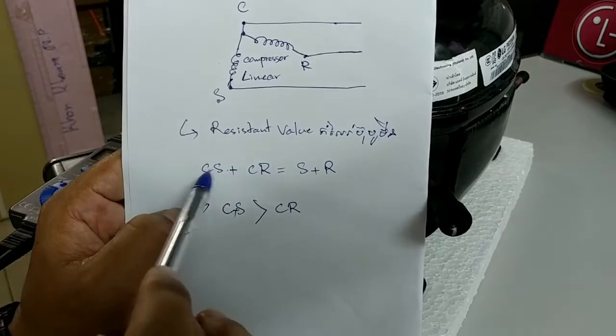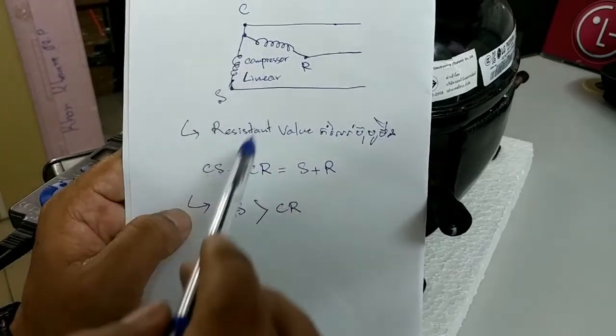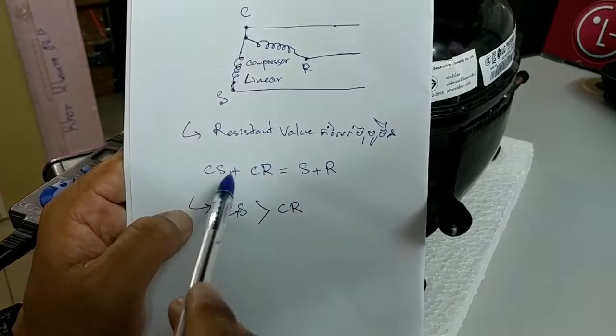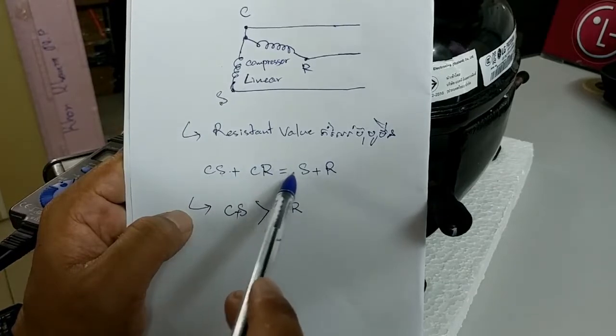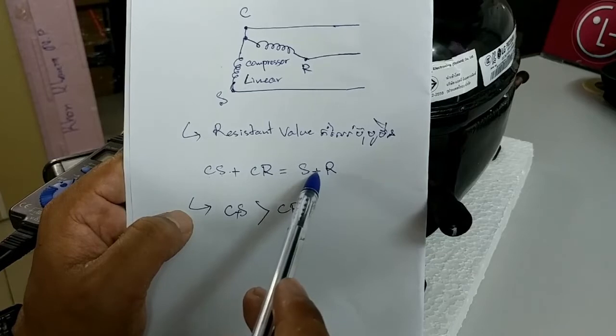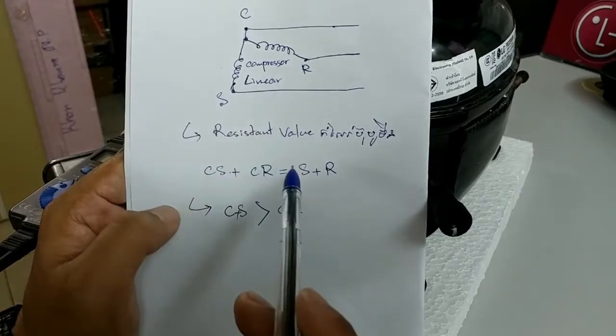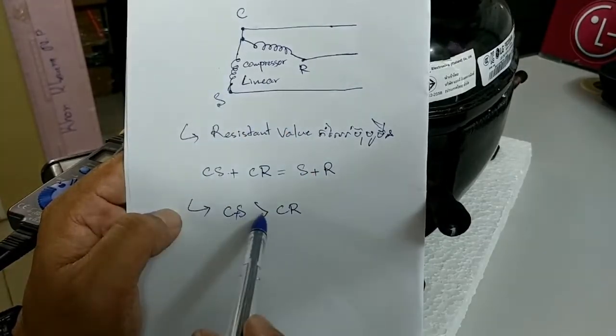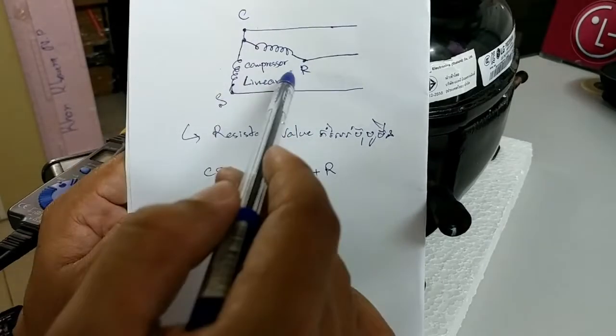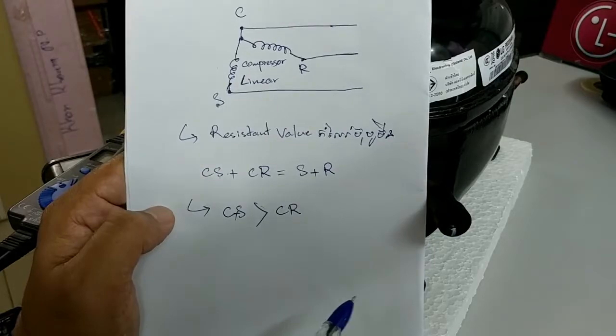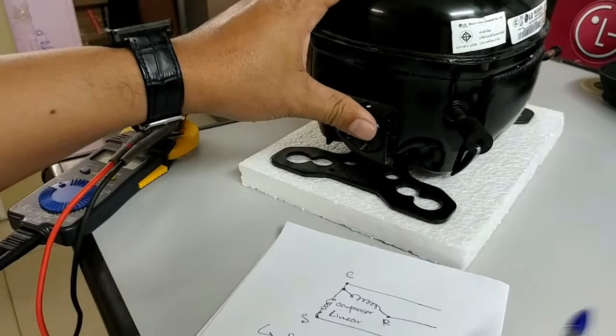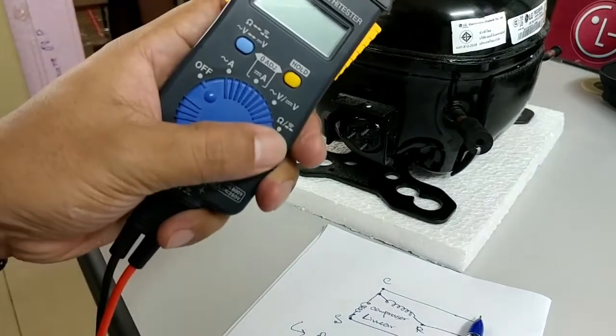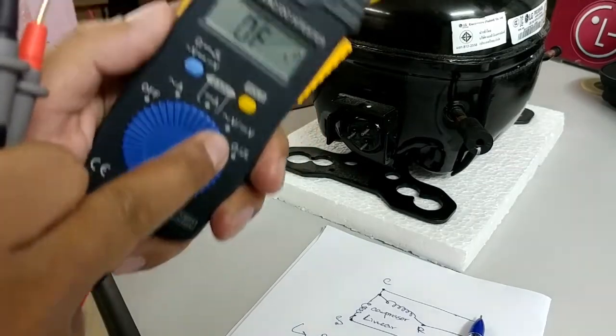We will measure following like this: residual value, CS + CR = S + R, so CS is greater than CR. If we measure CS, it must be weaker than CO. Let's check together by multimeter. We select ohm, resistance.